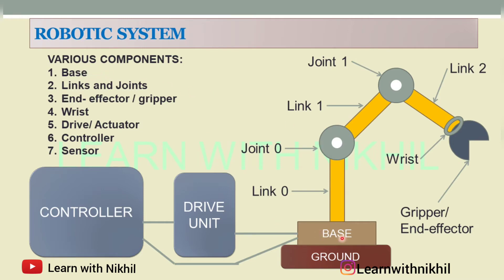So we saw about the base, links, and joints. Now the end effector or gripper — this is nothing but called the end effector or gripper. You can have different types of grippers. If you attach a welding machine, it will weld. If you want to pick up and drop anything, you attach different grippers — so according to the use, you attach different grippers. Then you have the wrist: this is the wrist joint where the gripper is attached.